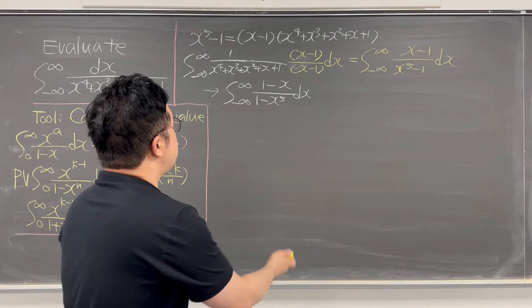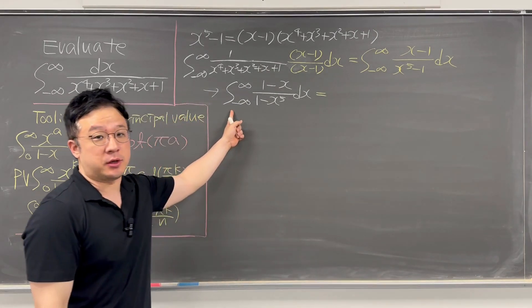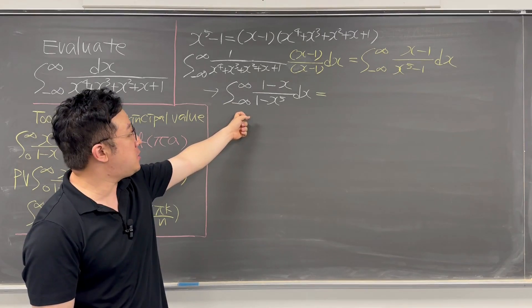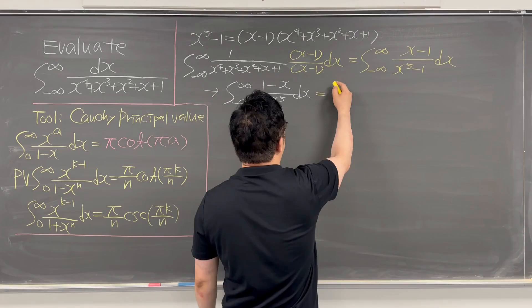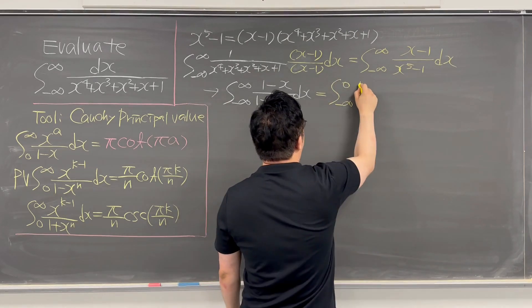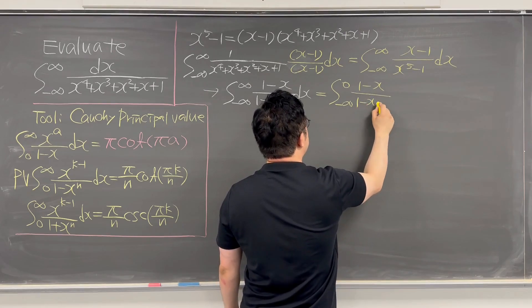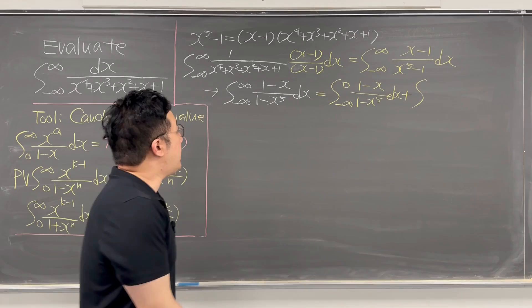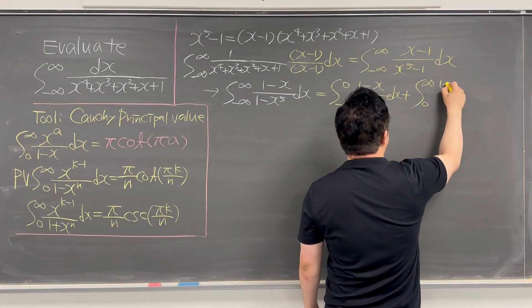Okay, so now this can be split into two integrals. One of them is the integral from negative infinity to 0, and the other is from 0 to infinity. So the first part is the integral from negative infinity to 0 of 1 minus x over 1 minus x to the power of 5 dx, and the second is from 0 to infinity with the same integrand.